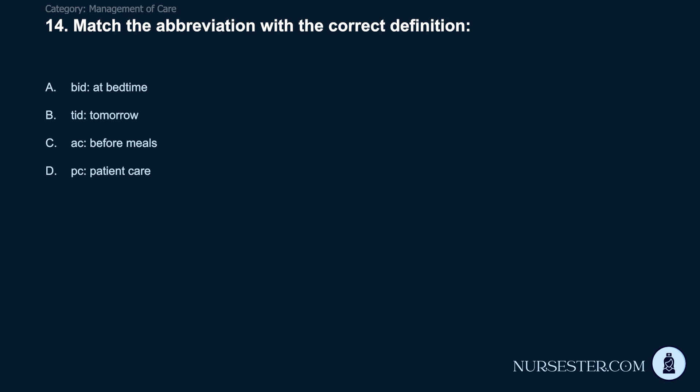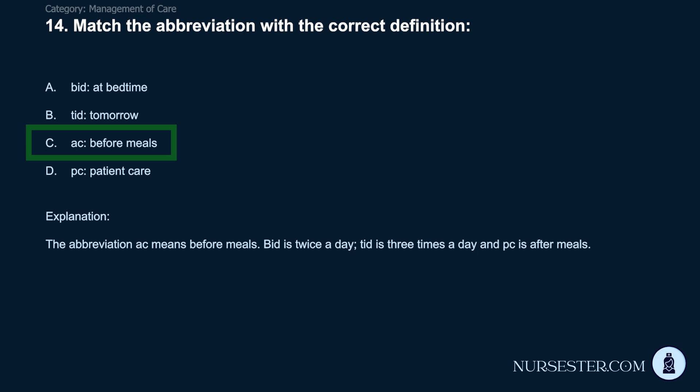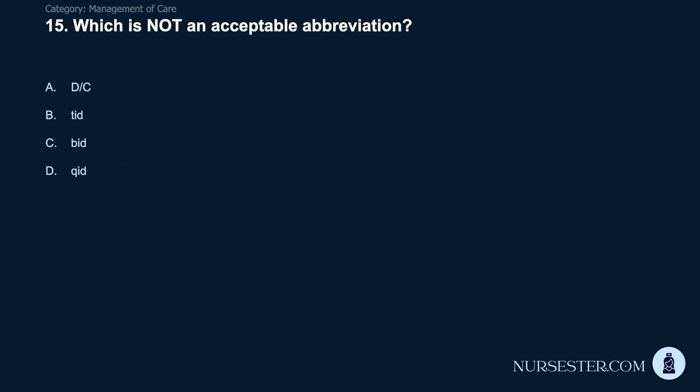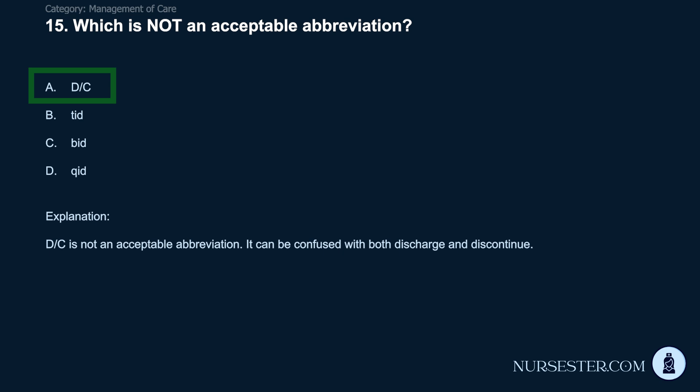Question 14: Match the abbreviation with the correct definition. BID: A) at bedtime. B) TID tomorrow. C) AC before meals. D) PC patient care. Correct answer: C. AC means before meals. BID is twice a day, TID is three times a day, and PC is after meals. Question 15: Which is not an acceptable abbreviation? A) D/C. B) TID. C) BID. D) QID. Correct answer: D. QID is not an acceptable abbreviation — it can be confused with both discharge and discontinue.